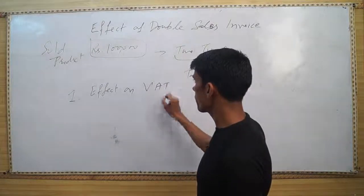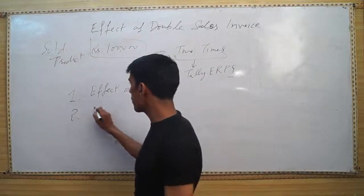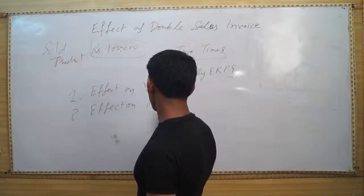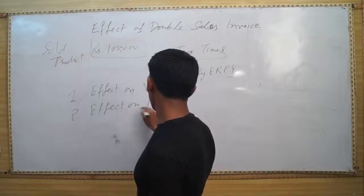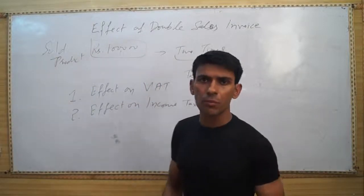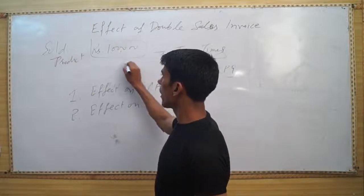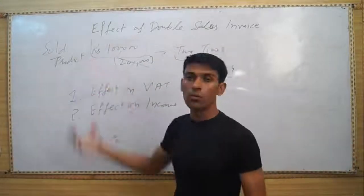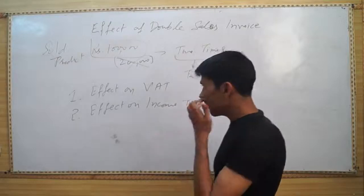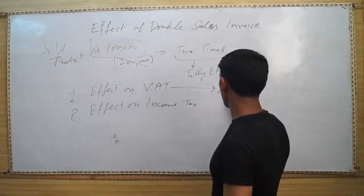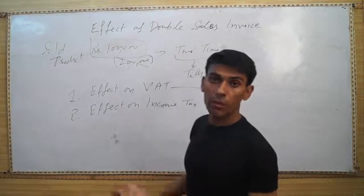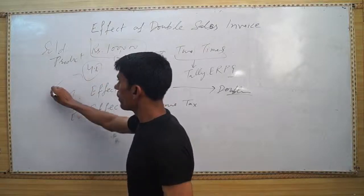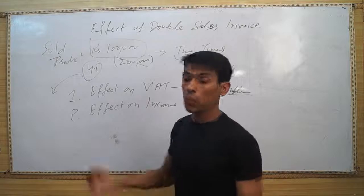and the second effect on income tax. In context of VAT, your customer will not pay you double of this two lakh because he knows he bought only one lakh of goods. But you have to pay double VAT. If VAT is four percent, you have to pay eight thousand instead of four thousand.